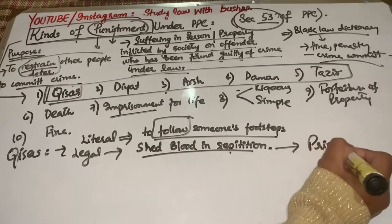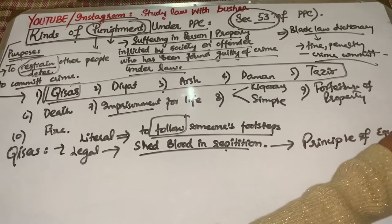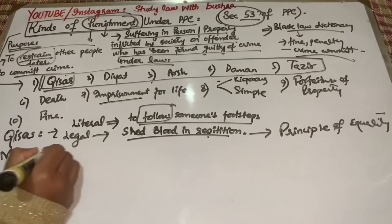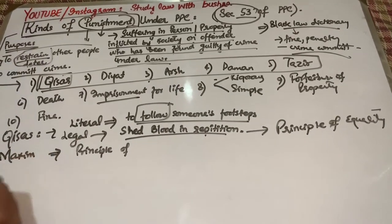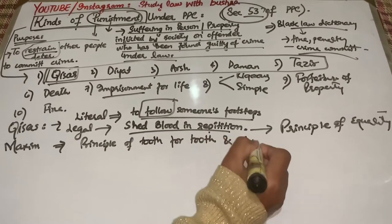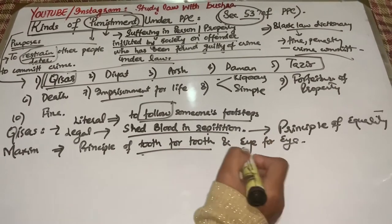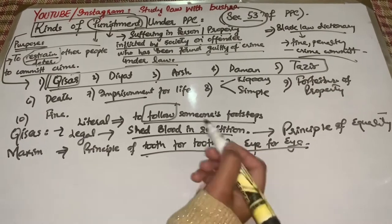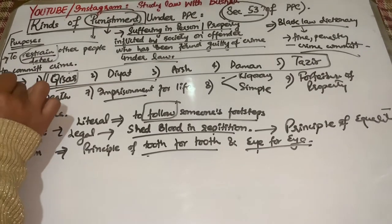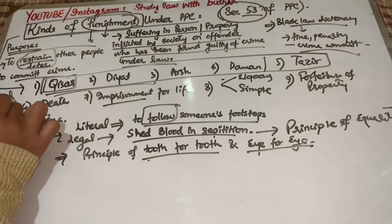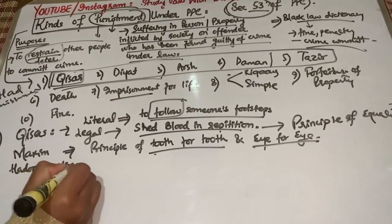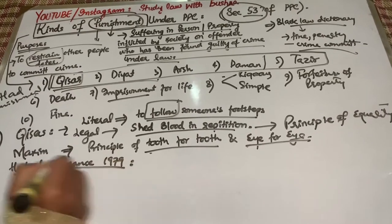Legal meaning agar dekhein, it means to shed the blood in repetition. Kisas mein hamare paas principle of equality aata hai. Famous maxim — principle of tooth for tooth and eye for eye — woh kisas ko deal karta hai. For example, agar kisi bande ne kisi ki aankh ko hurt kiya, toh doosre bande ki bhi aankh ko hi hurt karna. Yeh jo pehli char punishments hain, yeh hamare paas Hudood punishments hain.